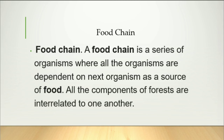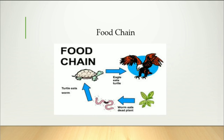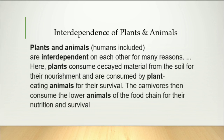A food chain is a series of organisms where all the organisms are dependent on the next organism as a source of food. All the components of the forest are interrelated to one another. In this picture you see a food chain.